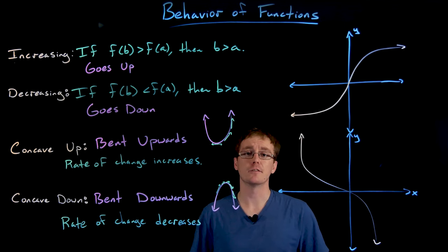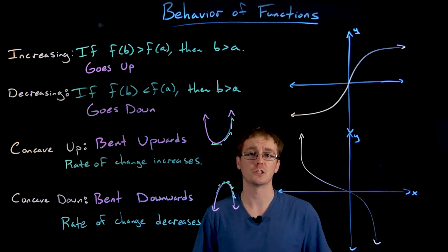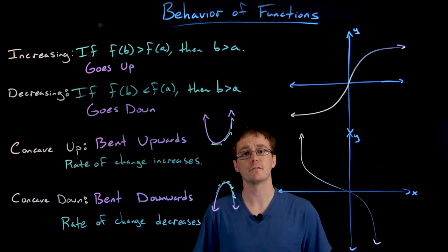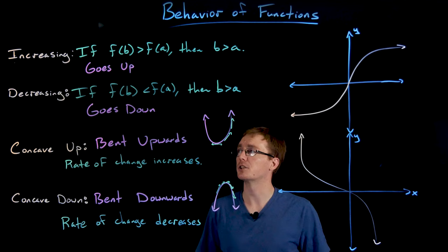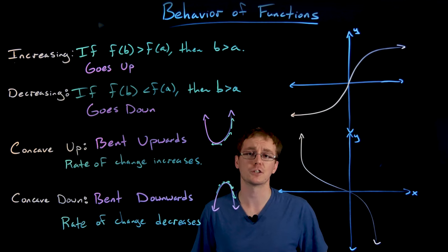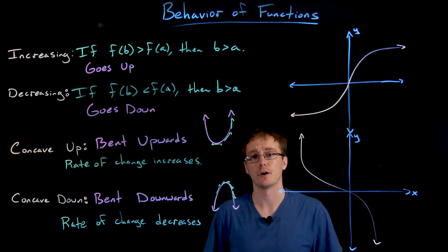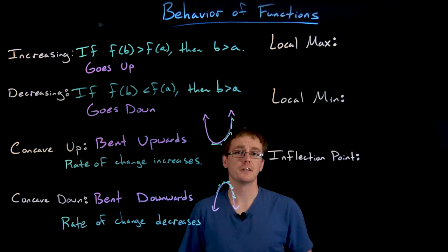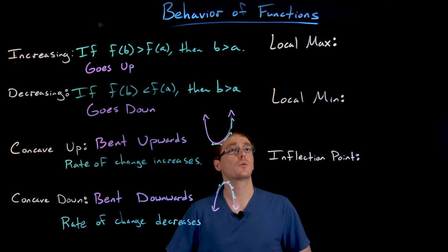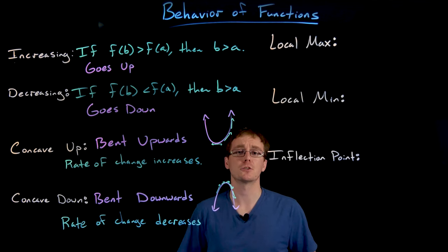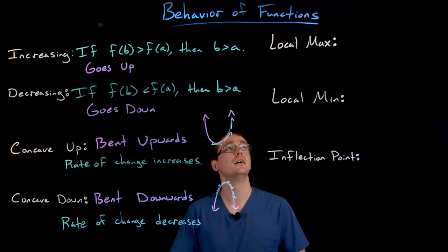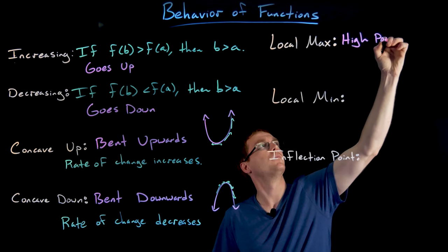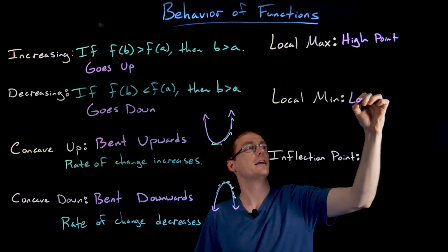There are a couple more definitions that will help us accurately describe our graphs and functions. It'll be a good exercise to go through all the toolkit functions and describe where they are increasing or decreasing and where they are concave up or concave down. We'll also go through informal and formal definitions of local maxima and local minima — those should be quick. A local maximum we can think of as a high point, and a local minimum as a low point.